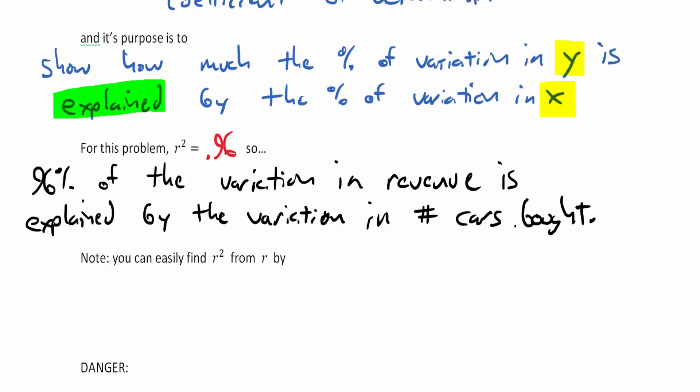All right, now that sentence really kind of puts it all together. 96% of the variation in revenue is explained by the variation of number of cars bought, which means that there is a high, and I don't want to use this word very lightly, this word that you may want to use is causation. Be very careful of that, because correlation is not causation, but this is the closest thing we can get to it. This is saying like, okay, the variation in revenue, practically all of it is explained by the number of cars bought. You can't make more money if you don't buy more cars.